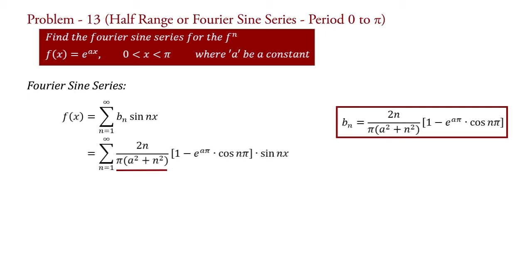Taking 2/π outside the summation, therefore f(x) = (2/π) · summation n=1 to infinity of n/(a² + n²) · [1 − e^(aπ) cos(nπ)] · sin(nx).